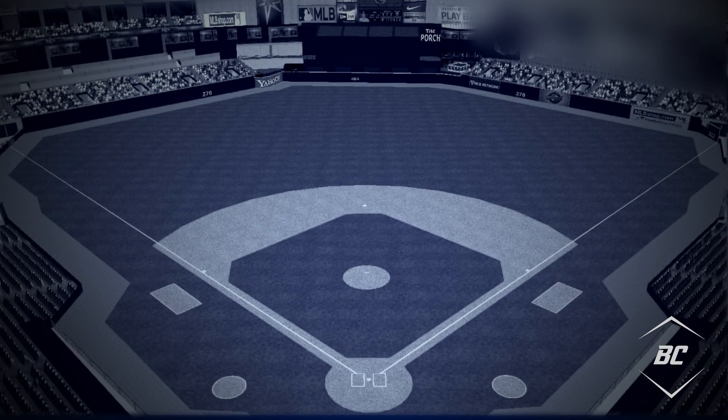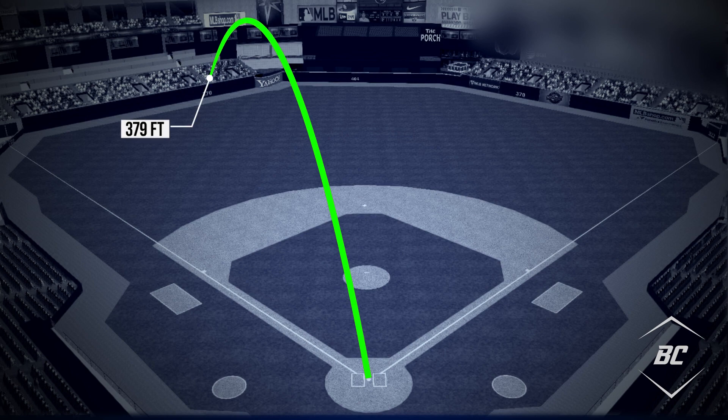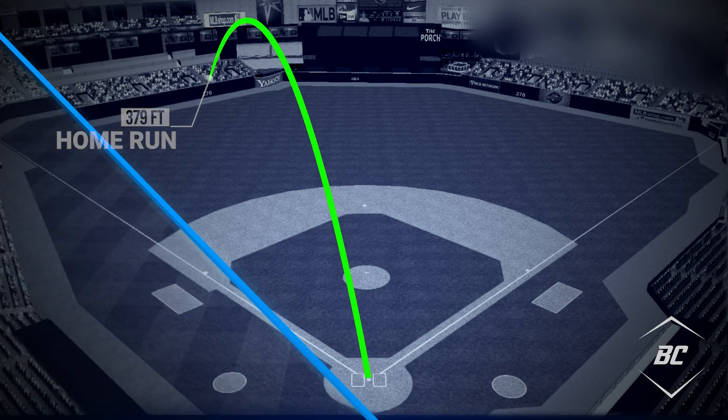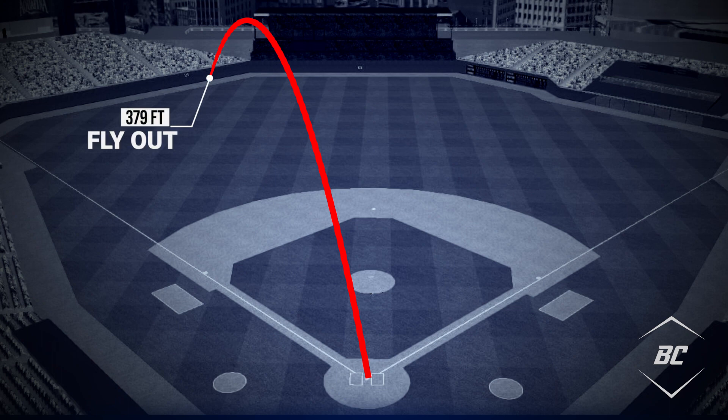Even though FIP is thought to be more useful in evaluating a pitcher than ERA, it's not without its flaws either. Mainly, the same way that pitchers have little control over the outcomes of balls in play, they also have limited control over the environments they play in. This refers to ballpark factors, where in one stadium a pitcher who gives up a fly ball to left center field that goes 379 feet is a home run, and in others it may not be. FIP is not park or league adjusted, although there are other versions that can account for this.